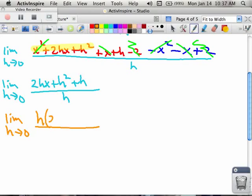So left over, I will have 2x plus h plus 1. And that's all over h. Do not forget about the 1.